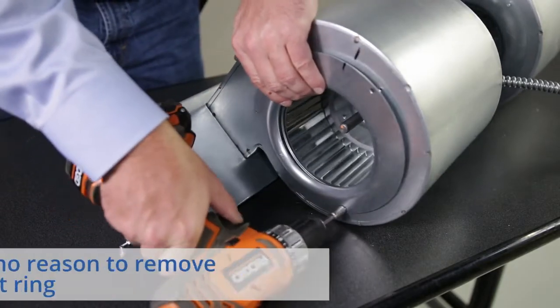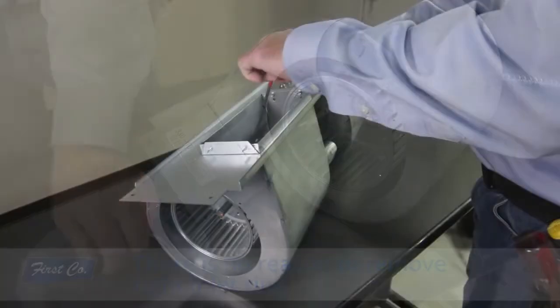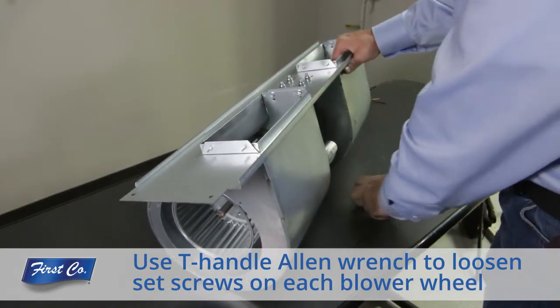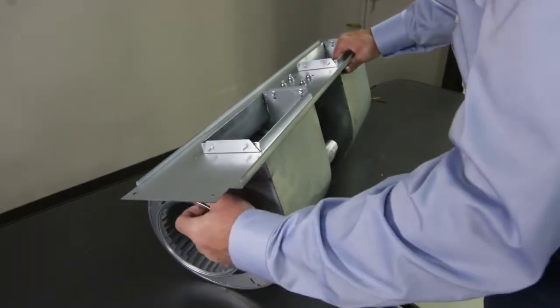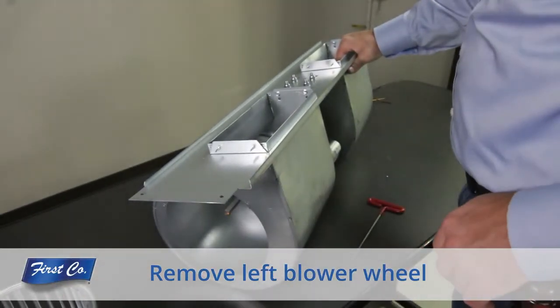Note that there is no need for you to remove the right inlet ring. Turn the blower housing so that you are looking into the blower throat. Using a T-handle Allen wrench, loosen the set screws on each blower wheel. With the set screws loose, remove the left blower wheel out of the side of the blower housing.